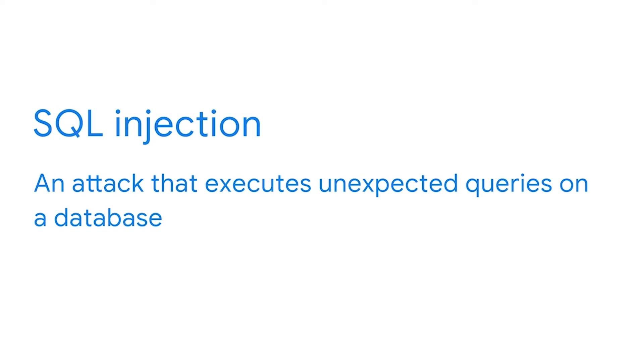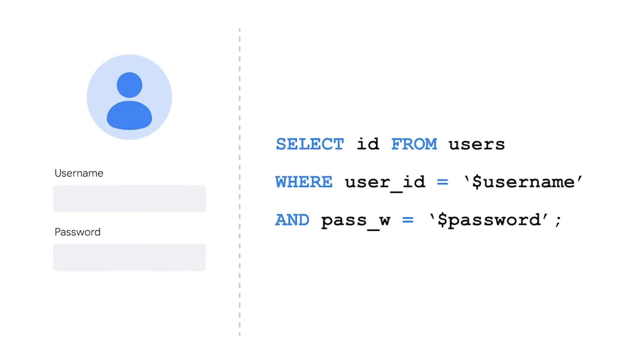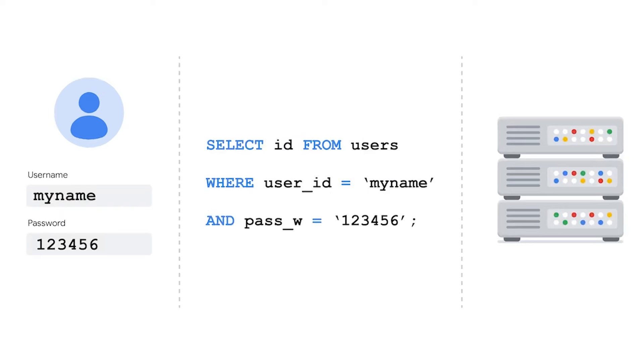A SQL injection is an attack that executes unexpected queries on a database. Like cross-site scripting, SQL injection occurs due to lack of sanitized input. The injections take place in areas of a website designed to accept user input — a common example is the login form to access a site. Websites vulnerable to SQL injection insert the user input exactly as entered before running the code. This is a serious design flaw that commonly happens because web developers expect people to use inputs correctly and don't anticipate attackers exploiting them.